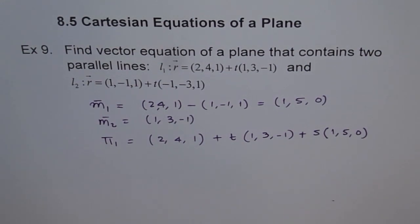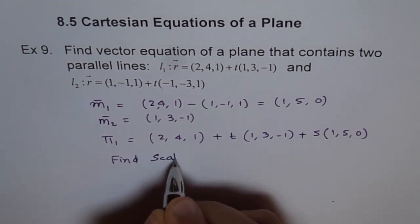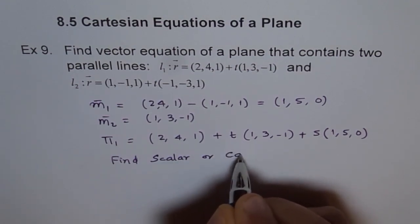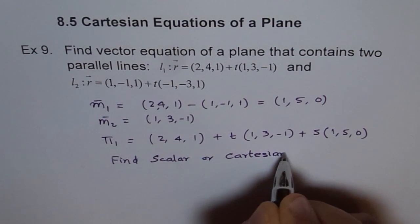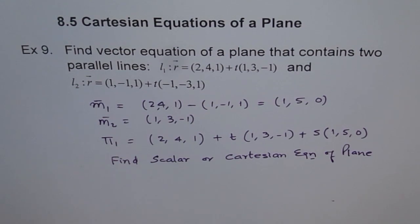Exercise for you is to find the Cartesian equation of this plane. So how will you find it? You have two direction vectors. Do cross multiply. So once you do cross product of these two, you'll get the normal. Use that normal and any one of these points to get your equation in Cartesian form. So this is kind of I'm leaving some homework for you. So you need to find scalar or Cartesian equation of plane representing this plane.